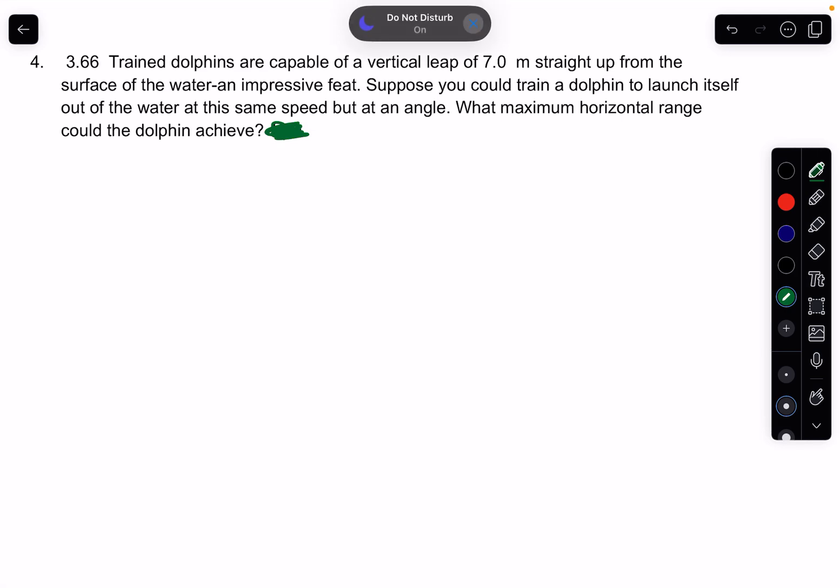This is a fun question. I like it. You've got a dolphin that can do a vertical leap of seven meters straight up. And what if you were to train a dolphin to launch itself out of the water at this same speed but at an angle? What is his maximum horizontal range?